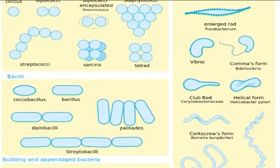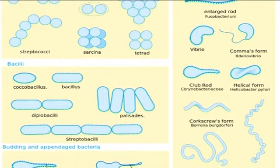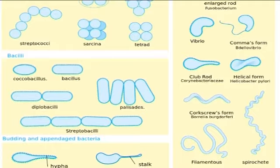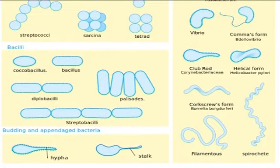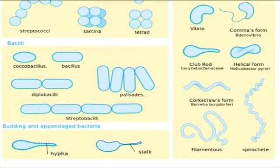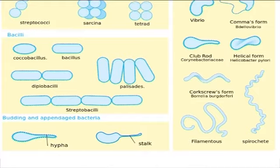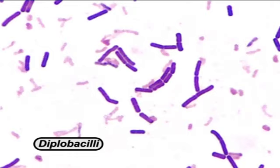Bacteria appear in different shapes like rods, spherical, and spiral. Rod-shaped bacteria are known as bacilli and may appear as a single or in chains, as shown in the figure. Very rarely they appear in pairs, for example, diplobacilli.